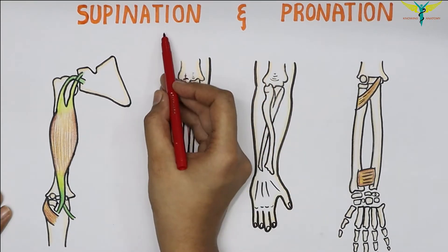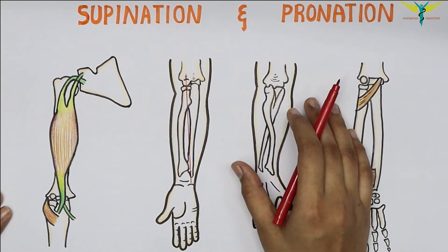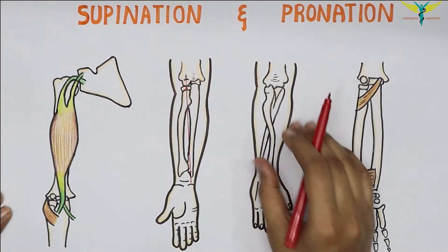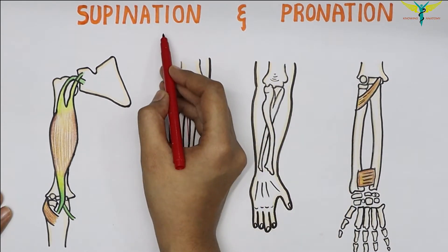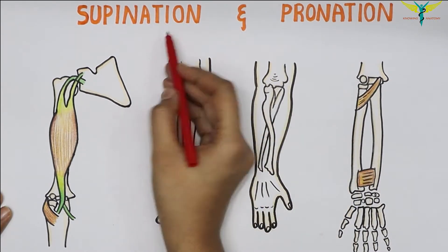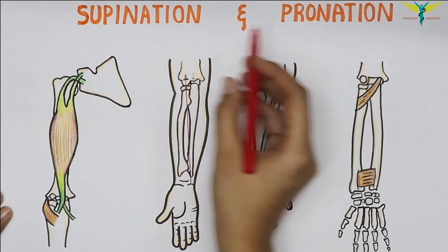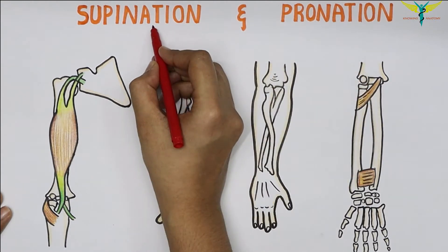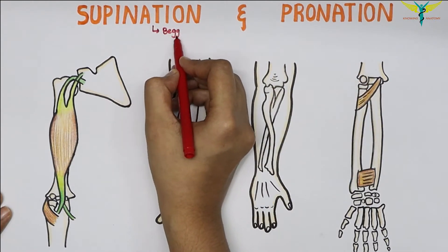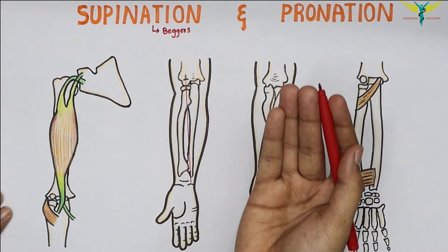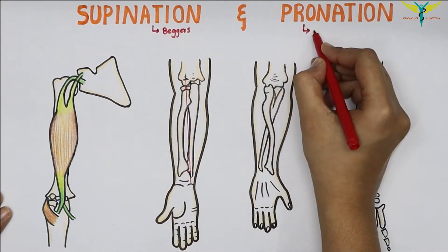The actions of supination and pronation can easily be remembered by a mnemonic: beggars supinate and kings pronate. So supination is remembered as beggars supinating, and pronation as kings pronating.